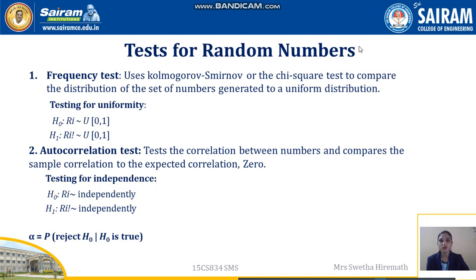The first test is the frequency test for random numbers. This test uses the Kolmogorov-Smirnov or the chi-square test to compare the distribution of the set of numbers generated to a uniform distribution — that is, we are testing for uniformity. We have two hypotheses: H0 states that the random numbers are uniformly distributed between 0 and 1 (accepted), and H1 states they are not uniformly distributed (rejected).